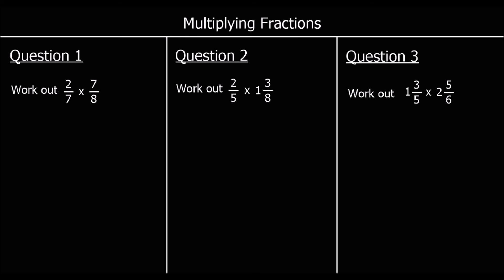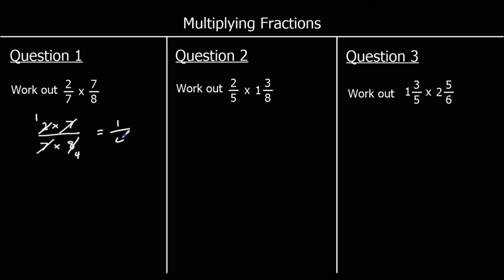Question one: two-sevenths times seven-eighths. We'll have two times seven over seven times eight. I'm going to simplify first — divide top and bottom by seven, which gives us two over eight. Then half the top and the bottom, which is one-quarter. If you multiplied first and got fourteen over fifty-six, you should be able to simplify back to one-quarter.